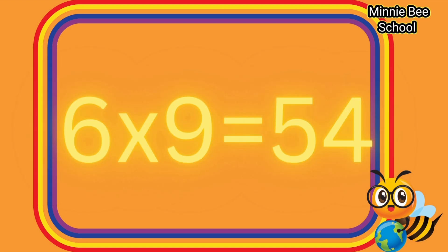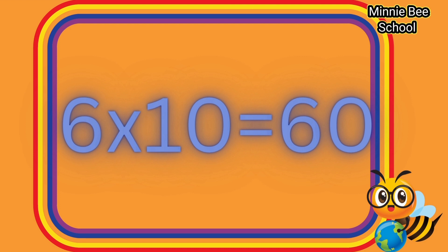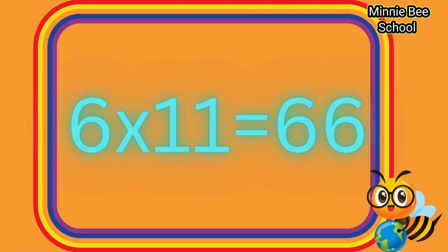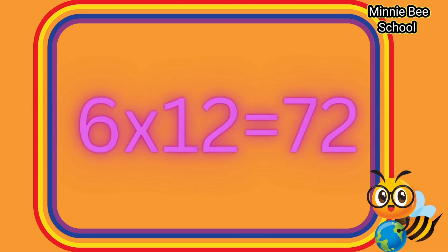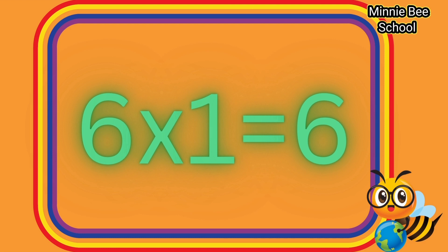Six times nine is fifty-four. Six times ten is sixty. Six times eleven is sixty-six. Six times twelve is seventy-two.